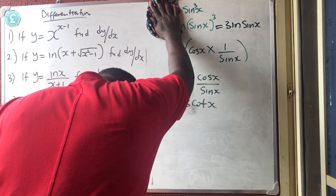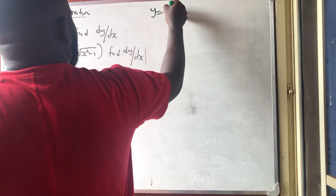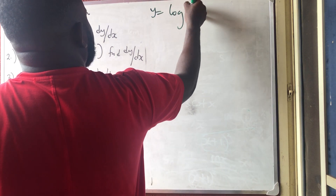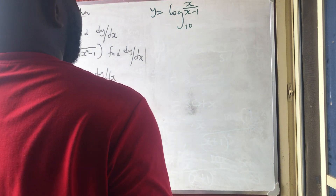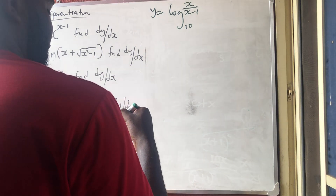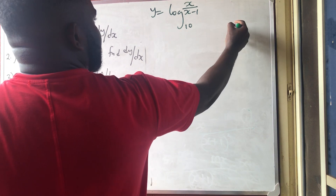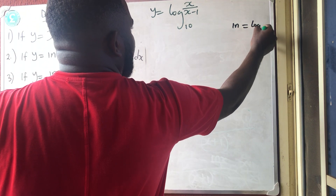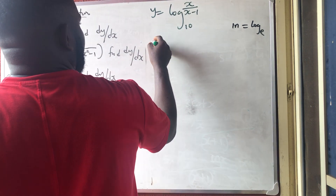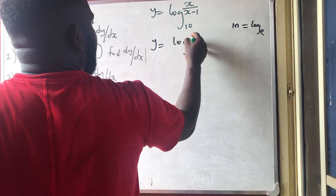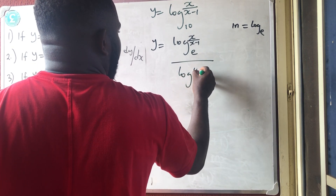The last question: y equals log base 10 of (x over x−1). There is a change-of-base law: when the base is not e, you convert by writing log(x/(x−1)) base e divided by log 10 base e, which equals ln(x/(x−1)) over ln 10.